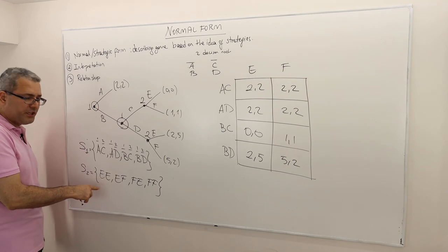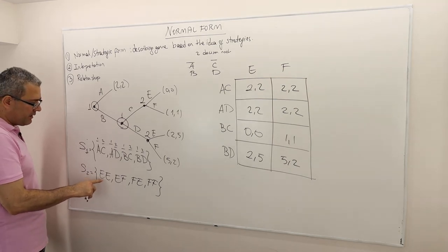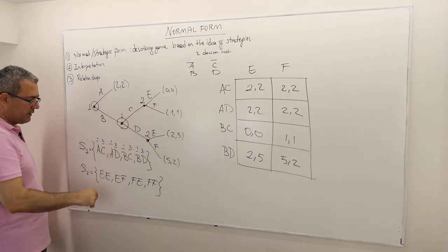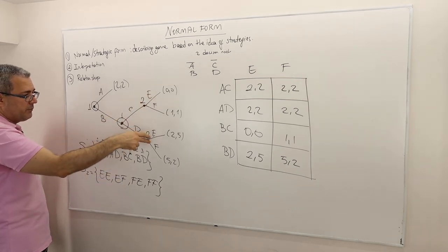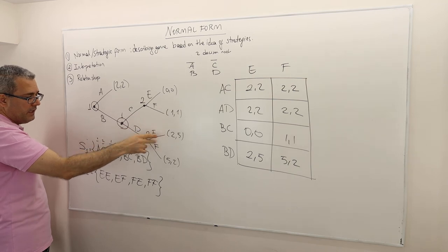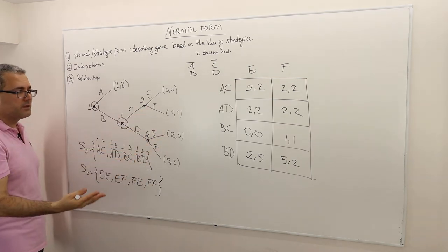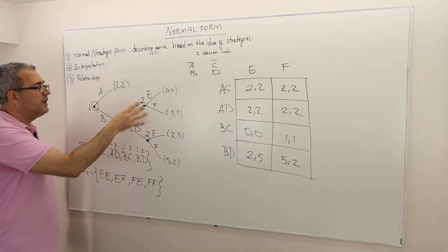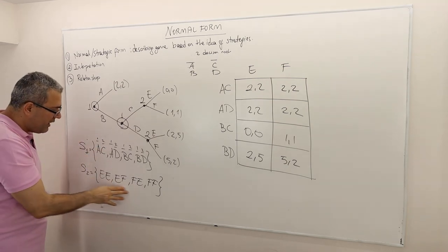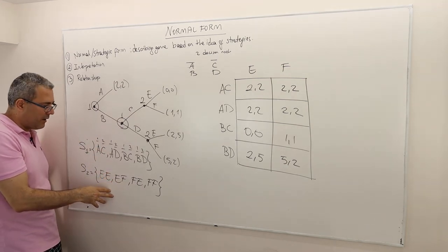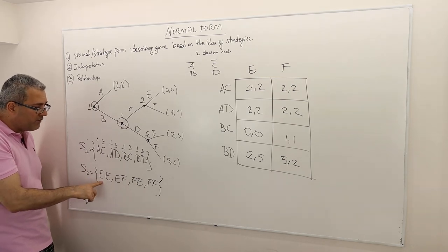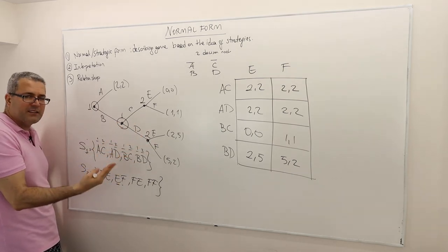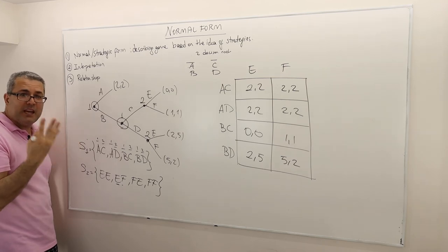EE means player two plays E at both decision nodes — E regardless. EF means he plays E at the first node but F at the second. FE means F at the first and E at the second. FF means F regardless. This is why we want to give different names to actions at different decision nodes when those nodes are not in the same info set — it can get confusing which E or F refers to which node.